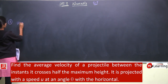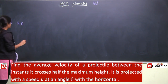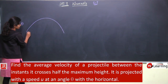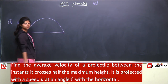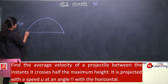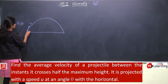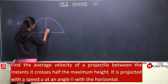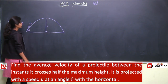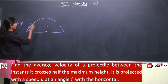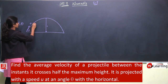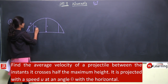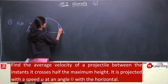Speed is given as u and angle theta. So what will be the trajectory? This will be the trajectory. It is projected with speed u at angle theta. The maximum height will be this. So at which two instants will it be at half the maximum height? It will be here somewhere and here somewhere — this will be h/2 and this also will be equal to h/2.